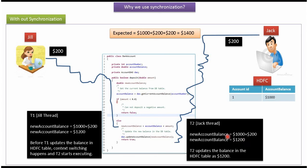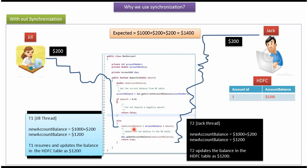Jack's thread updates $1200 in the HDFC table, so the final account balance is now $1200. Once Jack's thread finishes execution, Jill's thread resumes and also updates the new account balance as $1200 in the HDFC table. So the final account balance is $1200, but the expected account balance should be $1400. So $200 is missing from the current account balance because of a race condition. This kind of inconsistency problem will occur if we are not using synchronization.